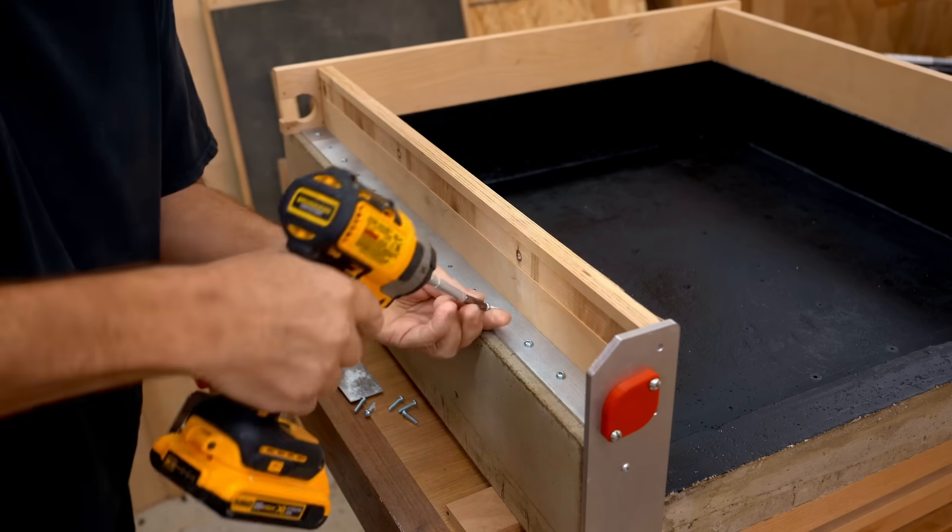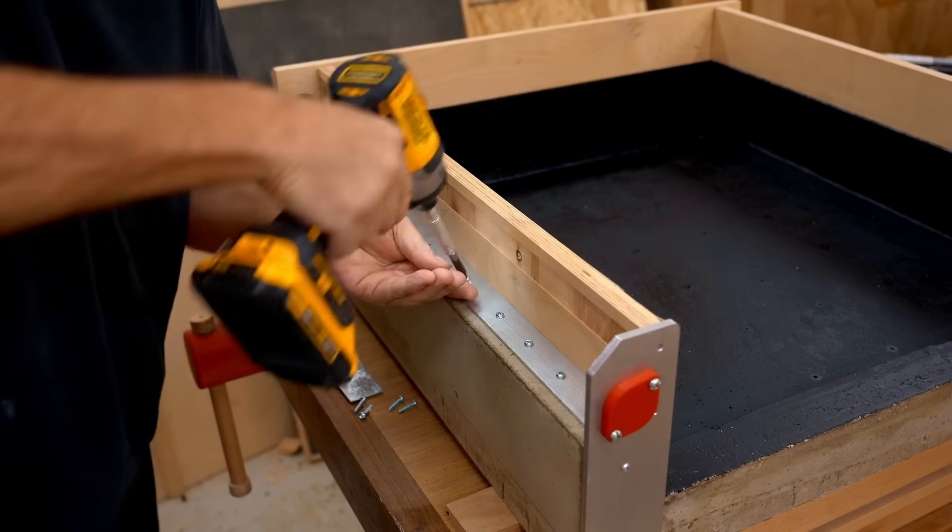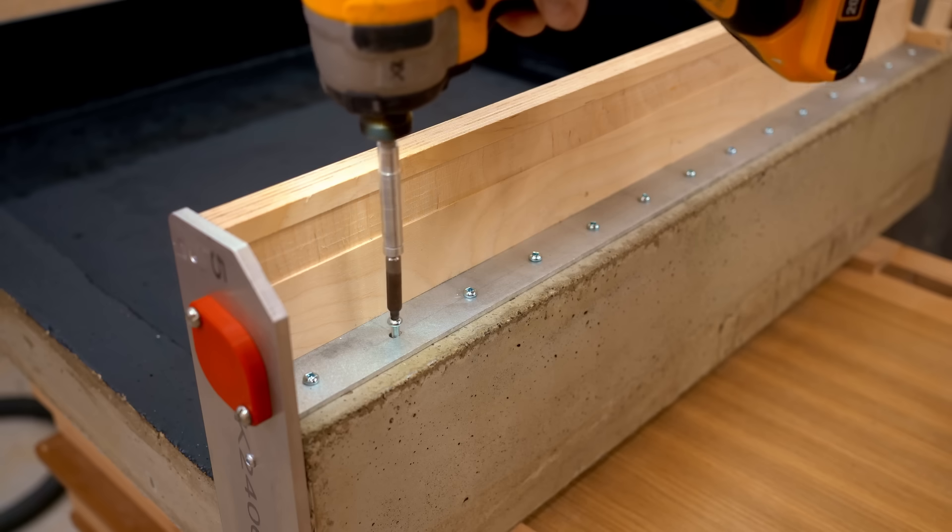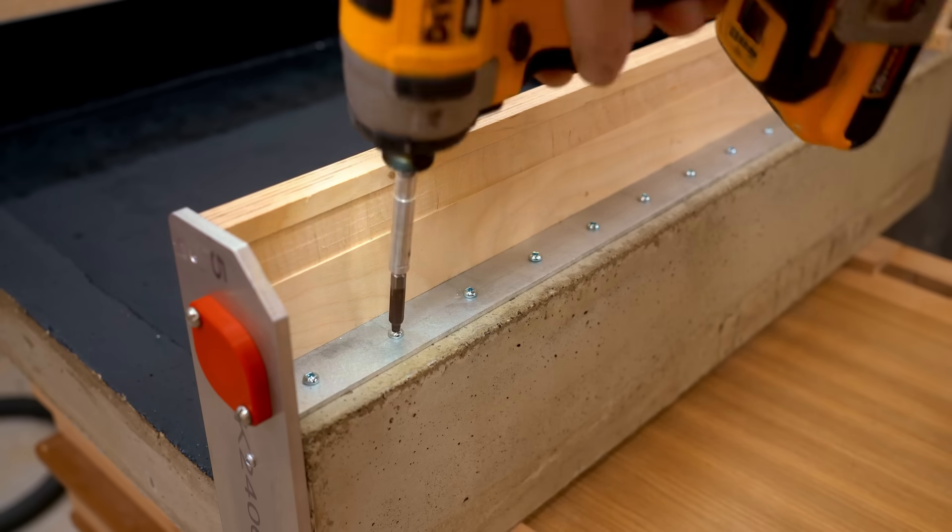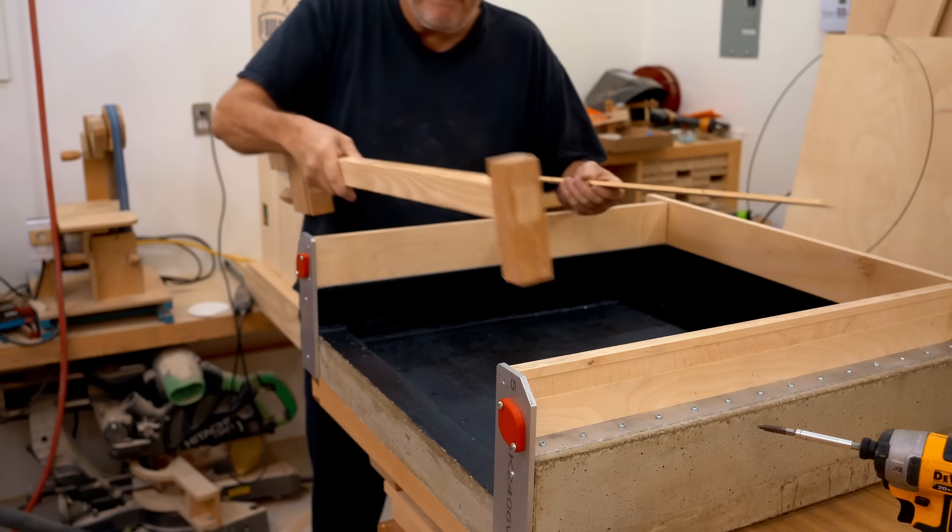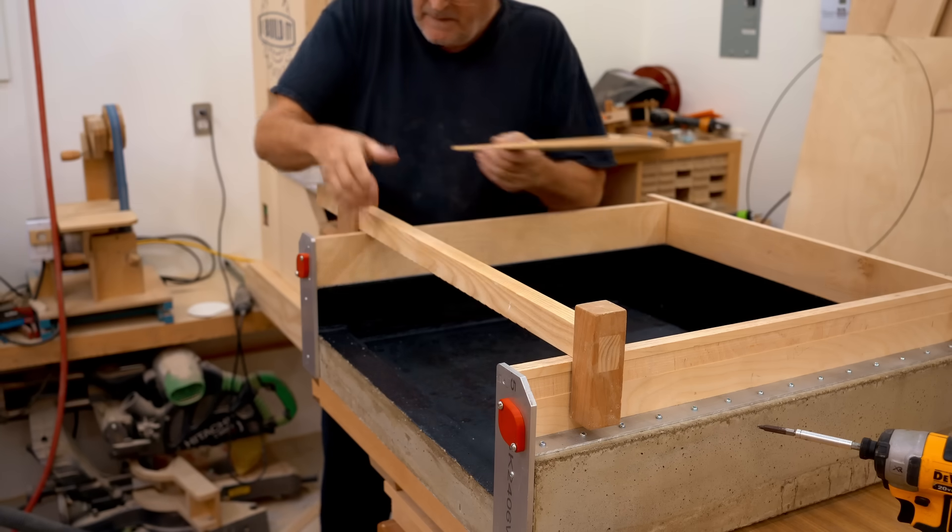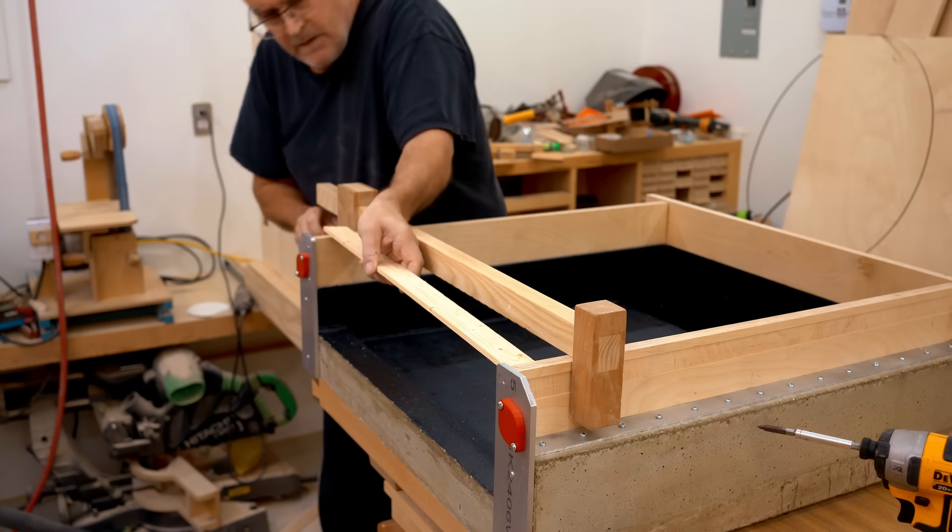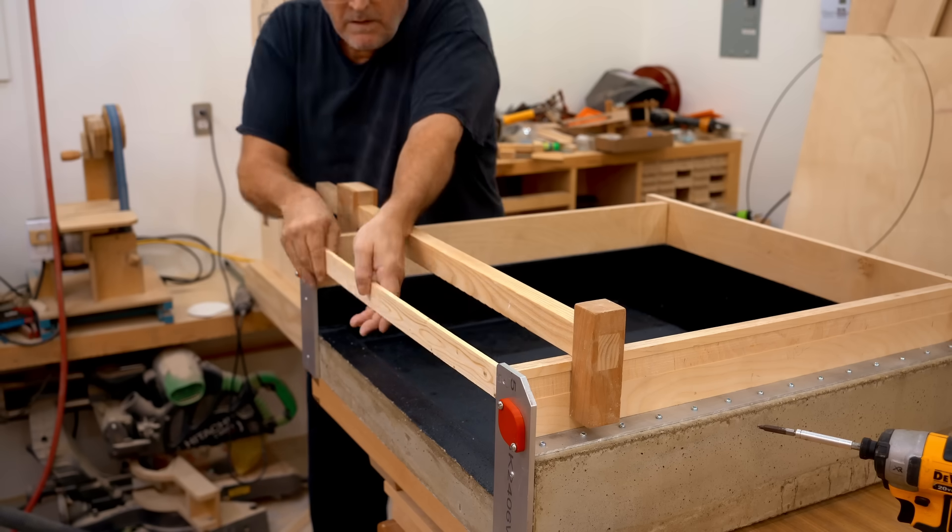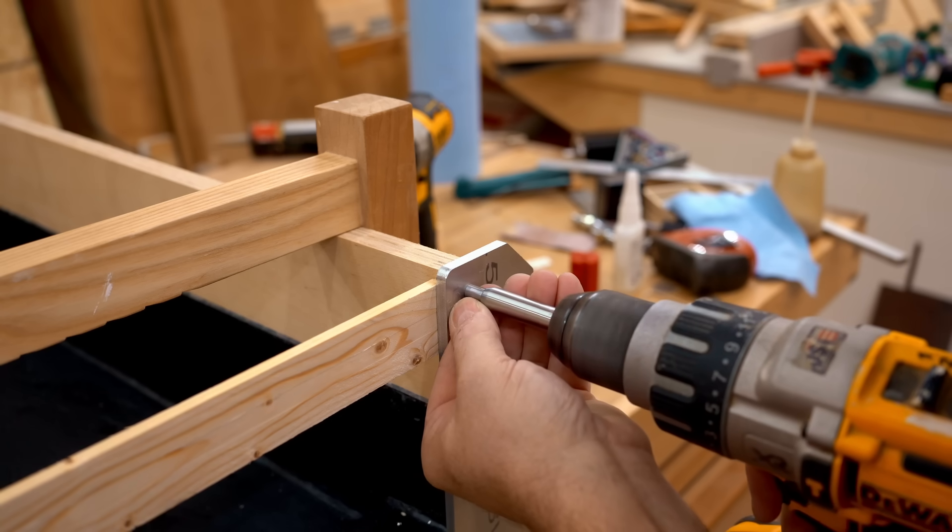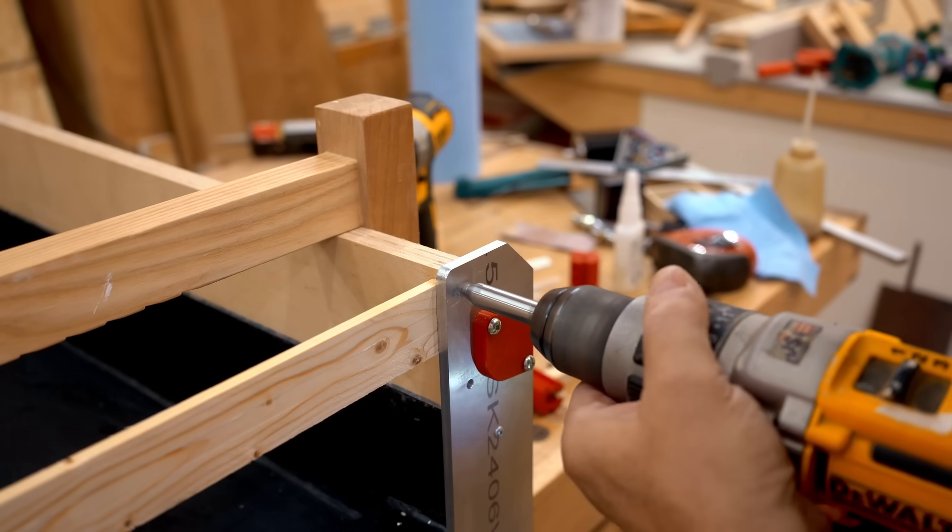I'm using number 8-32 screws. These are not wood screws, these are metal screws and they're screwing right into those plastic anchors that I cast into the concrete. To make sure that these side extensions are parallel with each other, I cut this spacer strip that I can clamp in place to hold them exactly the right distance apart.